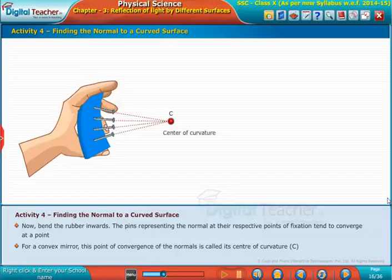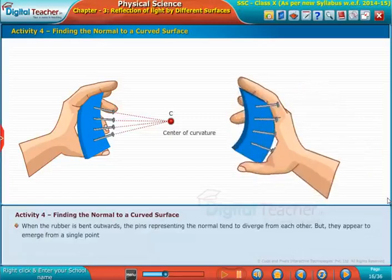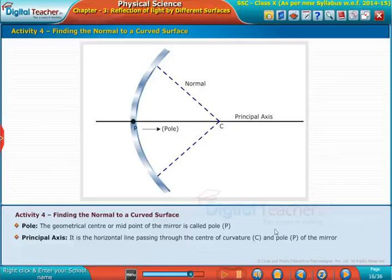When the rubber is bent outwards, the pins representing the normal tend to diverge from each other, but they appear to emerge from a single point. For a concave mirror, the principal axis is the horizontal line passing through the center of curvature C and pole P of the mirror.